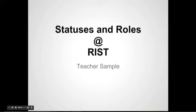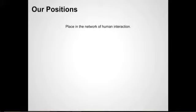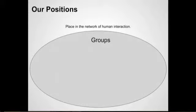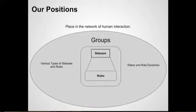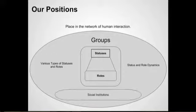In this session we're going to examine statuses and roles here at RIST for teachers. We all hold positions and these positions exist in a network of human interactions. We all live in groups and we all have statuses within these groups — these are our positions — and with these positions come roles or behaviors. These statuses change depending on our situation and age, and when you group people with different statuses together for a specific purpose to meet needs of other people, we call these social institutions.